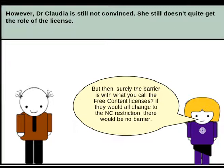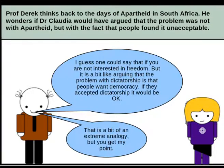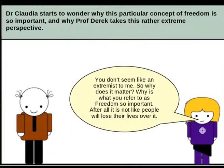Claudia argues: but then surely the barrier is with what you call the free content licenses. If they would all change to the NC restriction, there wouldn't be any barrier. Professor Derek thinks back to the days of apartheid in South Africa and wonders if Claudia would have argued that the problem was not with apartheid, but with the fact that people found it unacceptable. He responds: I guess one could say that if you are not interested in freedom. But it's a bit like arguing that the problem with dictatorship is that people want democracy — if they accepted dictatorship, it would be okay. That's a bit of an extreme analogy, but you get my point. Claudia wonders why Professor Derek takes this rather extreme perspective, noting: you don't seem like an extremist to me, so why does it matter? After all, it's not like people will lose their lives over it.